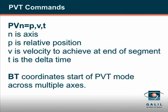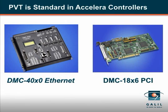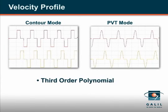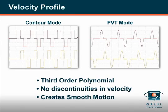The commands PV and BT are used to create the PVT motion, which is a standard feature in the DMC-4000 and DMC-18X6 accelerator motion controllers. The PVT mode uses a third-order polynomial to interpolate between position points. This results in no discontinuities in velocity and creates smooth motion.